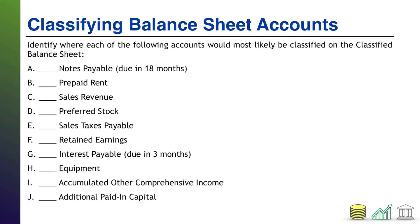All right, welcome back. So where would each of the following most likely be classified? First up: notes payable due in 18 months. So 18 months is longer than one year. Payable indicates that this is a liability, and so we're going to call this a long-term liability.